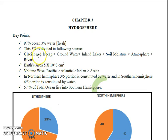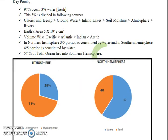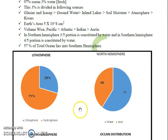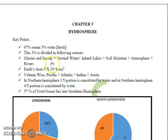As shown in the pie chart, the hydrosphere covers around 71% of the total area on Earth and the lithosphere is around 29%. The total area of the Earth is approximately 5 × 10⁸ km².